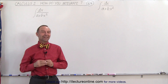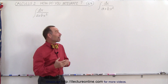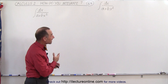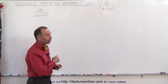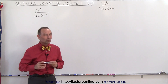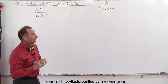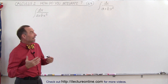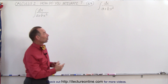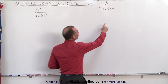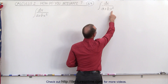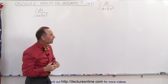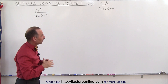Welcome to Y-like Turnline. Our next example of an integral is the integral of dx over a plus bx squared. We can't use the natural logarithm trick because we have an x squared in the denominator and we do not have an x in the numerator. So how do we deal with that?